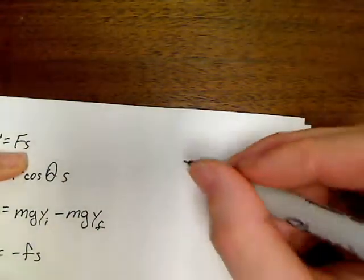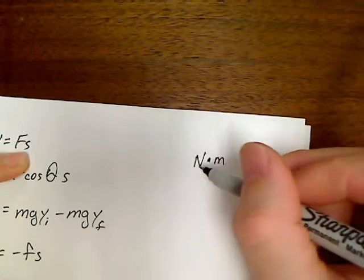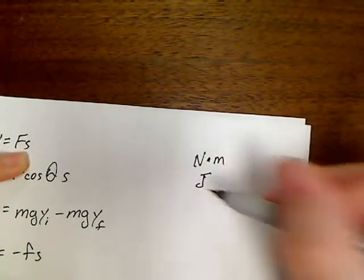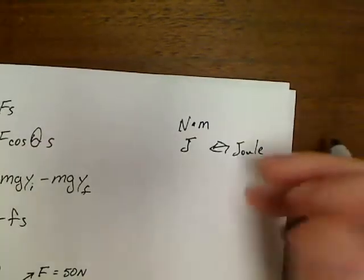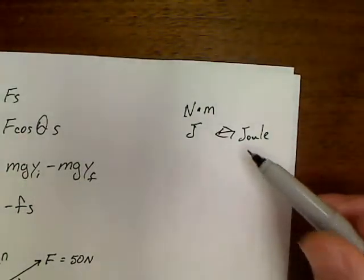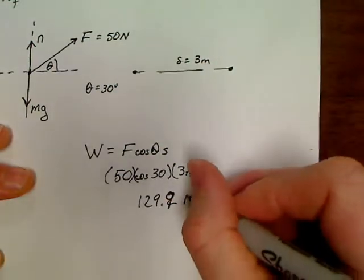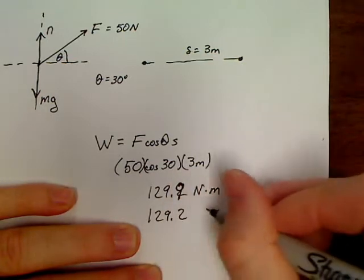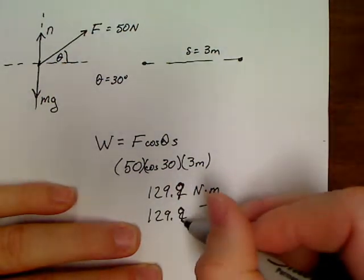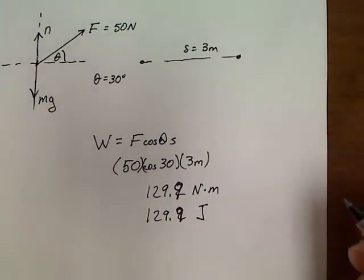Now, the unit for work is this. When you multiply a force times the distance, that gives you an answer of newton meters. So, a newton times a meter. A newton meter is known as a joule. It's known as a joule. And it's named after a guy named James Prescott Joule is where it gets its unit from. So, the answer to this problem for work, 129.9. We could write an answer of either newton meters or we could write 129.9 joules. So, that would be an example of an answer.